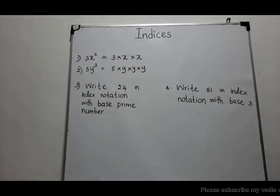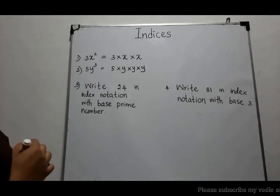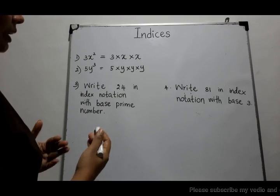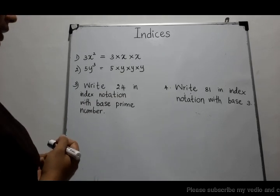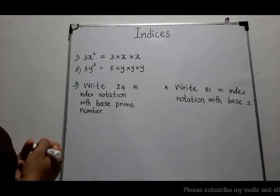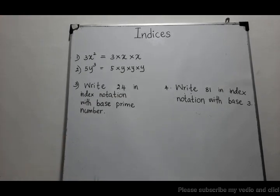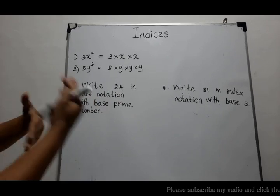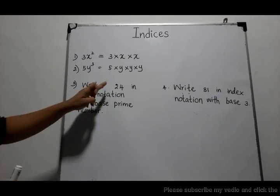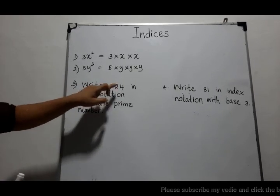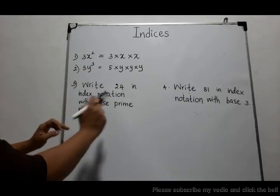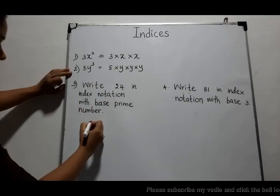In grade 7 you also learned how to write a given number in index notation with a base prime number. Here you are given a question to recall our knowledge about indices: write 24 in index notation with a prime base.